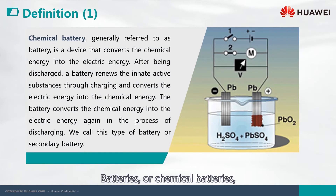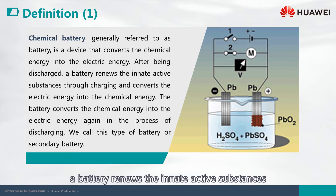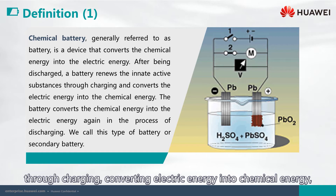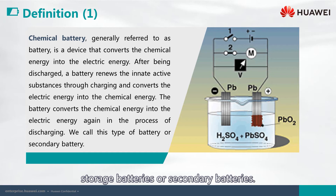Batteries, or chemical batteries, convert chemical energy into electric energy. After being discharged, a battery renews the innate active substances through charging, converting electric energy into chemical energy, and is ready for reuse. We call these rechargeable batteries storage batteries, or secondary batteries.